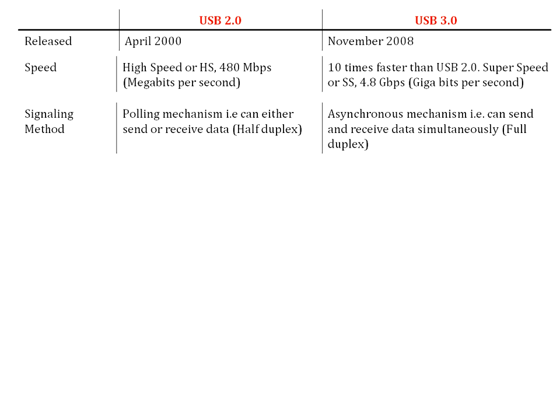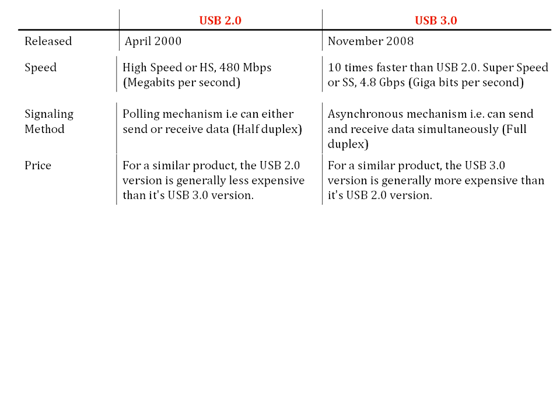For signaling method, USB 2.0 uses a polling mechanism and can either send or receive data — half duplex. USB 3.0 uses an asynchronous mechanism and can send and receive data simultaneously — full duplex.